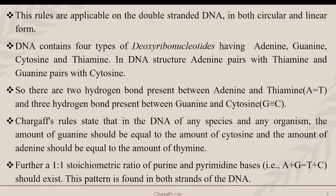In DNA structure, adenine pairs with thymine and guanine pairs with cytosine. There are two hydrogen bonds present between adenine and thymine, and three hydrogen bonds present between guanine and cytosine. Chargaff's rules state that in the DNA of any species and any organism, the amount of guanine should be equal to the amount of cytosine, and the amount of adenine should be equal to the amount of thymine.